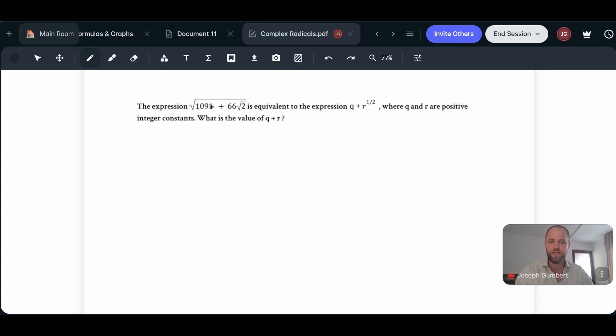The expression of the square root of 1091 plus 66 root 2 is equivalent to the expression q plus r to the one-half, where q and r are positive integer constants. What is the value of q plus r?